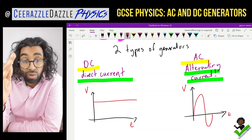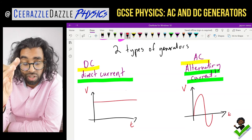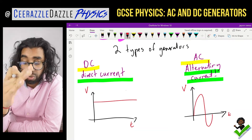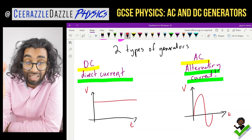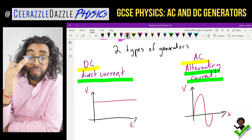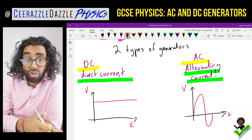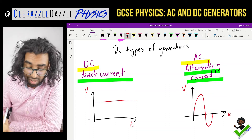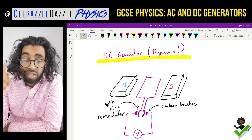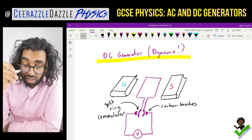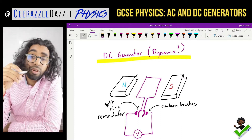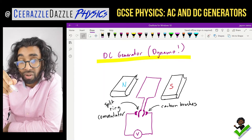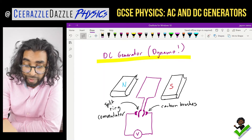So there are two types of generators — one produces DC voltage and the other produces AC voltage. Let's look at the construction of the DC generator, which is sometimes also known as the dynamo.